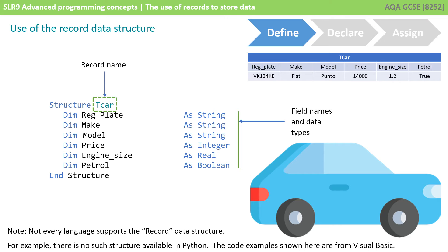Note that because Python doesn't support the record structure, the example code we're showing here is from Visual Basic. Don't get too worried about the actual code — we're just getting you to understand the record data structure that's available in many languages. You can see we've declared the record structure and given it the name TCAR, then simply listed all the variables this record structure will contain, their names and data types. We've written 'end structure' to tell the program that's the end of our record definition.